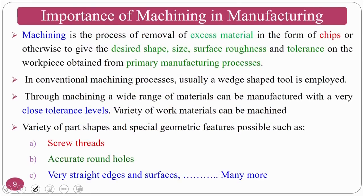Regarding the importance of machining in manufacturing: the machining process is a removal process of excess material. You take one block of material to the required shape by removing excess material and get the desired shape, size, surface roughness, and tolerances specified by the customer. There are two types of machining: conventional machining and advanced machining. This course deals with conventional machining using single point and multi-point cutting tools. Machining deals with a wide variety of materials with close tolerances; as work piece materials change, tool materials also change, since the tool hardness must be much higher than the work piece hardness.